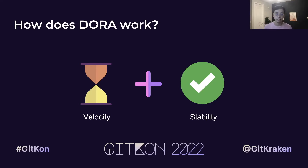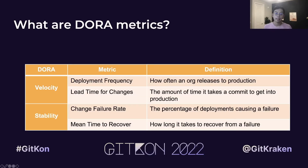When these two distinct focus areas are considered as a whole and not independently of one another, the framework becomes much more robust and harder to misinterpret. At the heart of DORA are four key metrics divided into two groups: velocity and stability.